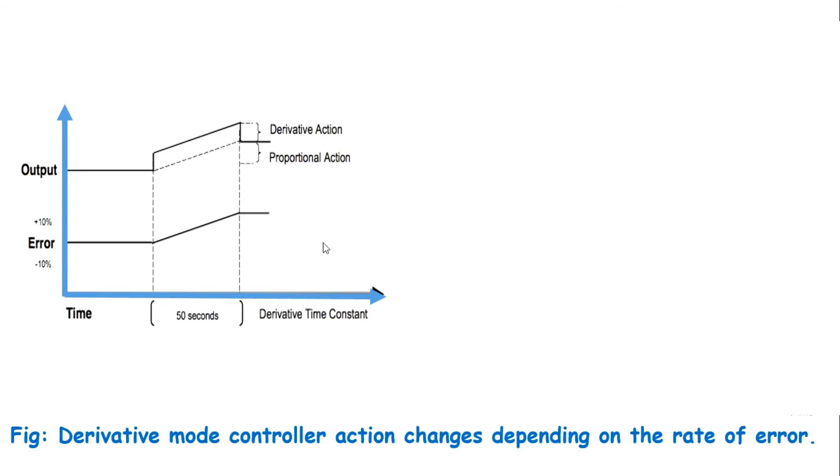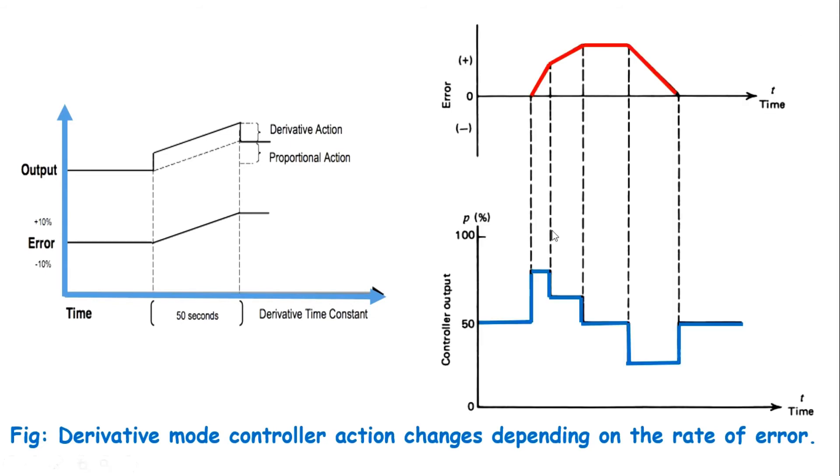Now, this figure illustrates how derivative action changes the controller output for various rate of change of error. For this example, it is assumed that the controller output with no error or rate of change of error is suppose 50%.